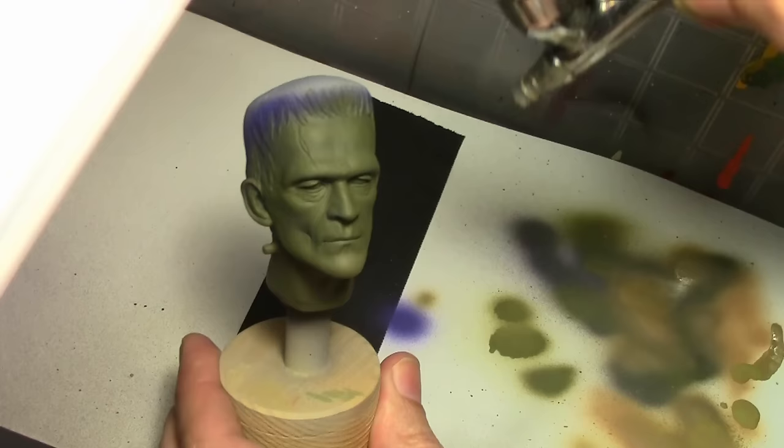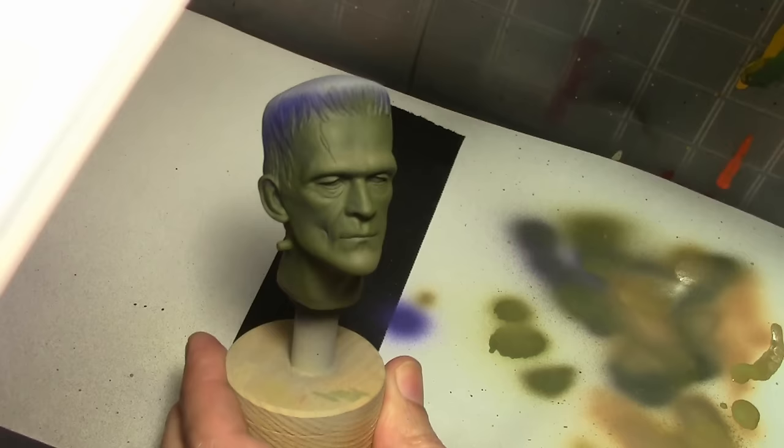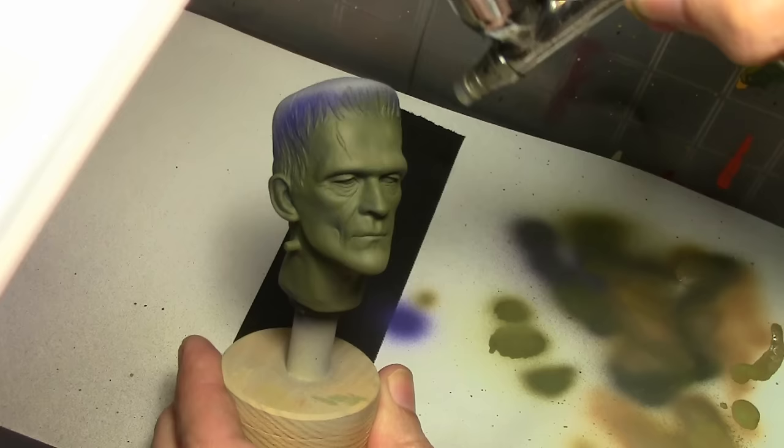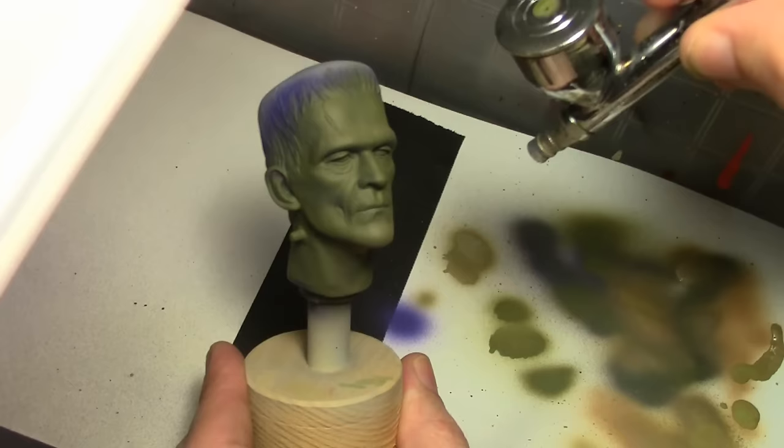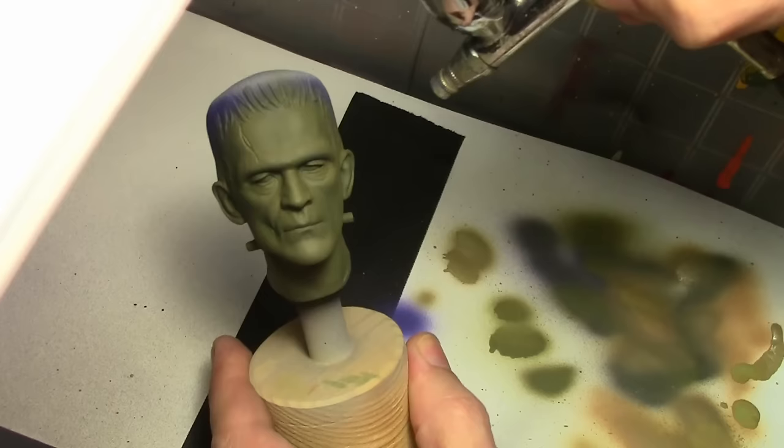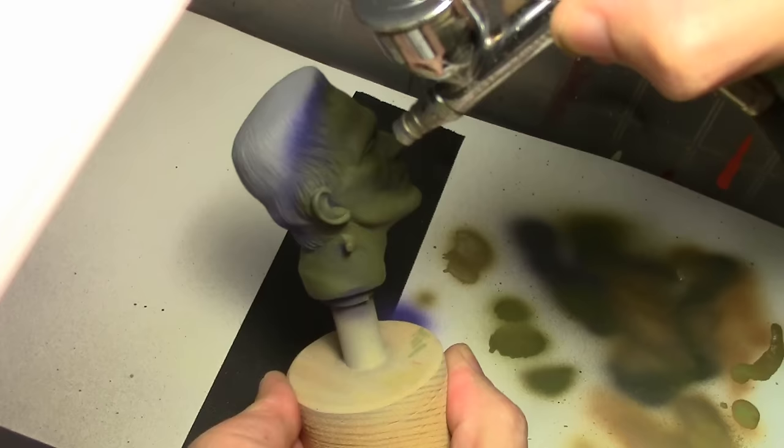Proceeding on to the highlights, our next color is Russian Uniform highlighted with some Vallejo Game Color Heavy Skin Tone. Turn down the air pressure on the airbrush really low, and we're working mostly from a top-down area. I'm just trying to apply highlights on some of the larger highlighted surface areas. So, broad strokes along the cheeks, and the ridge, and the ears, and all those areas.